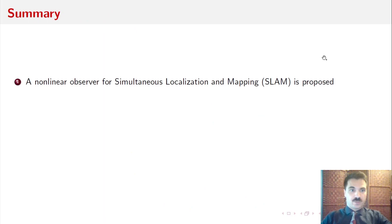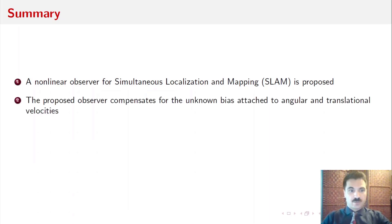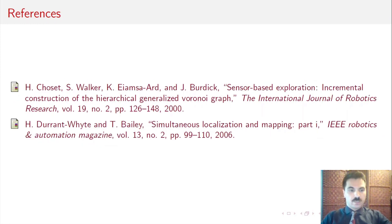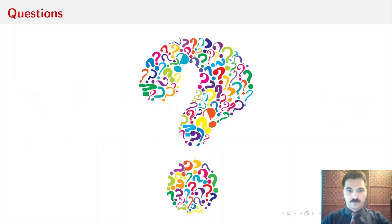In summary, a nonlinear observer for simultaneous localization and mapping is proposed. The proposed observer compensates for unknown bias attached to angular as well as translational velocities. The numerical results reveal the observer's ability to concurrently map the unknown environment and obtain the vehicle's pose. Here is a set of references used during the presentation. Thank you for listening.